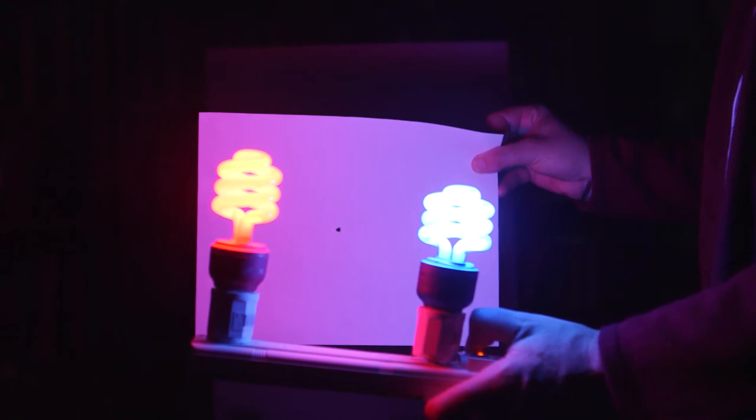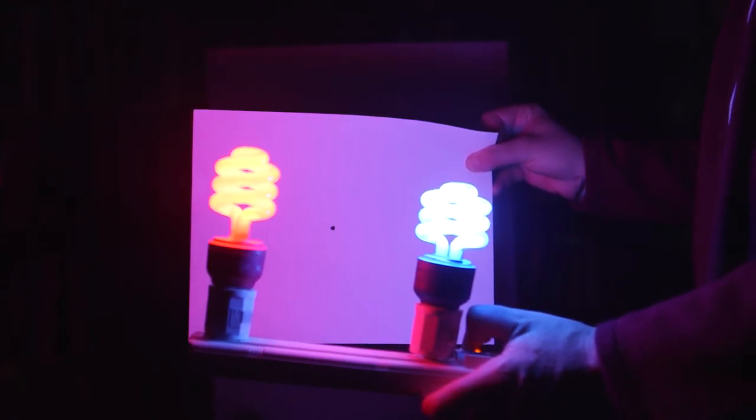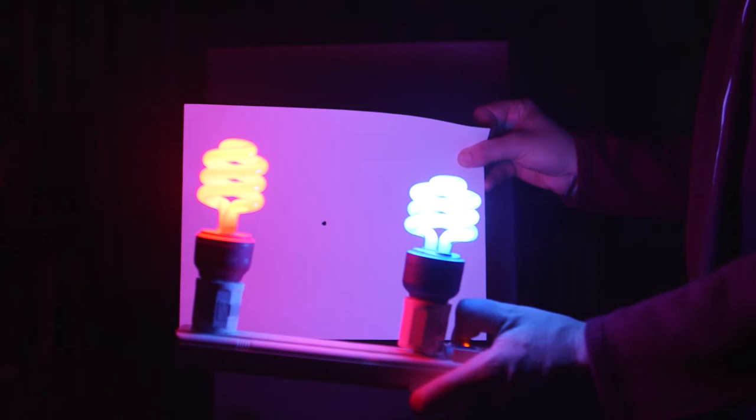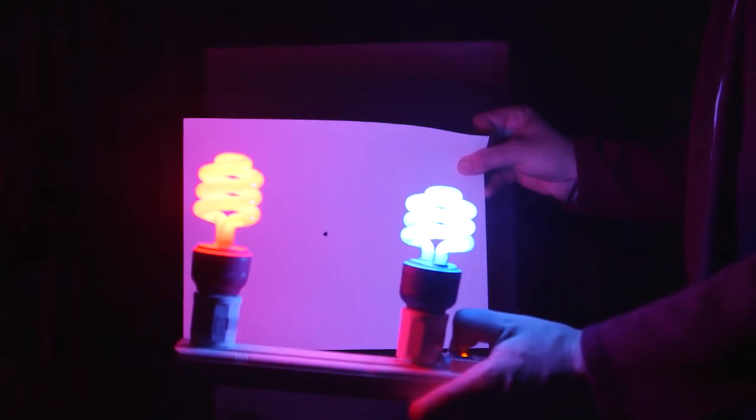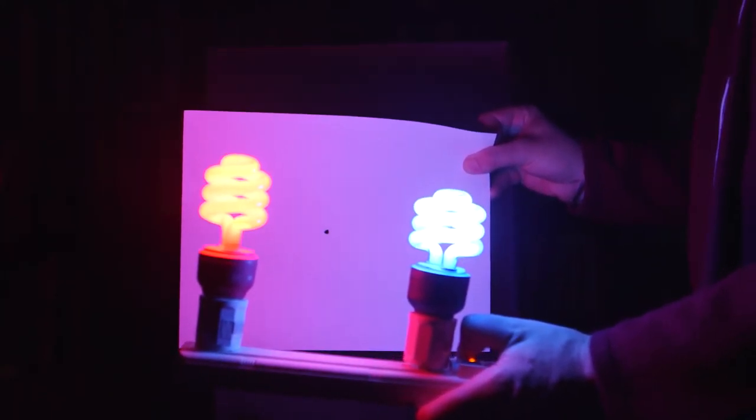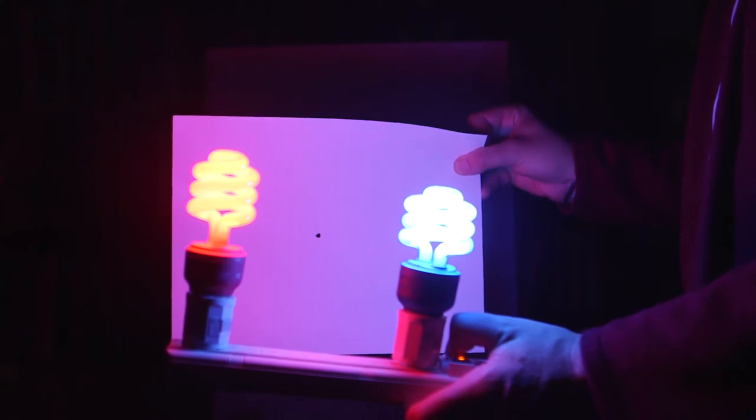So our optical device has done a very interesting thing. It's both flipped the image right, left, and up, down. Now what will happen if instead of one hole, I use two holes?